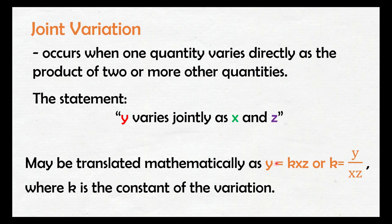Diba dun sa direct variation, y varies directly as x — yung unang variable na nabanggit nasa left side, tapos yung pangalawang variable na nabanggit nasa right side, tapos imumultiply siya sa constant. Dito naman sa joint variation, mag-vary siya sa two or more quantities. So dito dalawa siya, xz. Ang gagawin lang natin dun is idadagdag lang natin yung isang variable na dagdag dun sa statement natin — hindi lang x yung ilalagay natin sa right side ng equation, kasama din yung isang variable na z. And then, ito naman yung equation para sa constant.